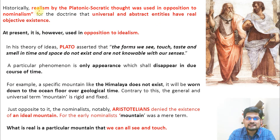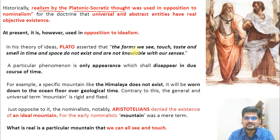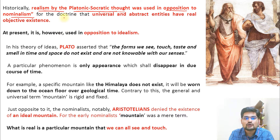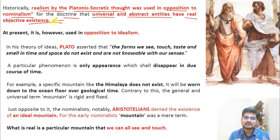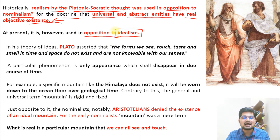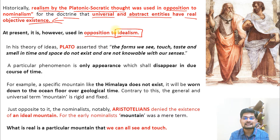Historically, realism by Platonic and Socratic thought — as studied in earlier geographical thought lectures — was used in opposition to nominalism, just for the name's sake. This was the doctrine that universal and abstract entities have real objective existence, the basic idea in the Platonic and Socratic world of ancient Greece. At present, realism is considered an opposition to the idealistic concept of the mind's superiority. It talks about reality as what it exactly is, how we actually see it.